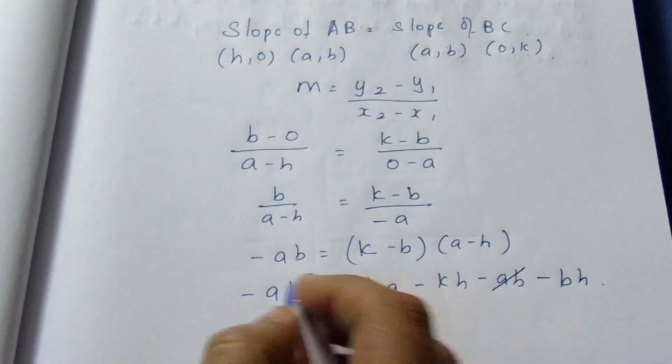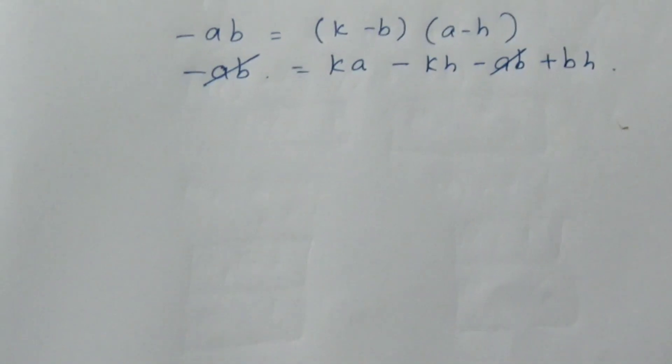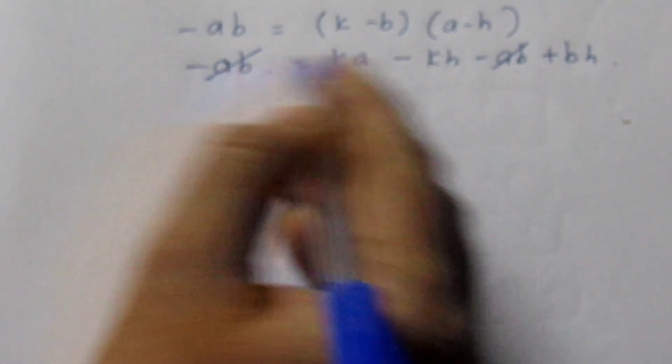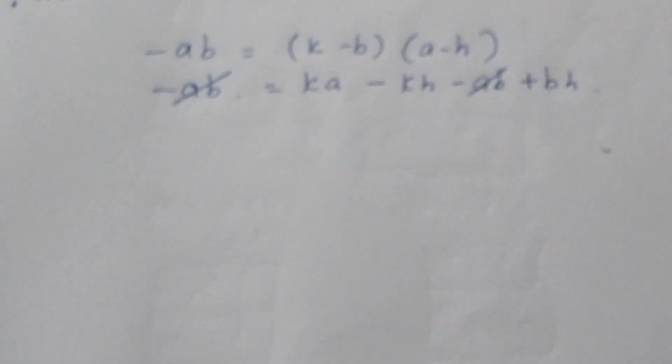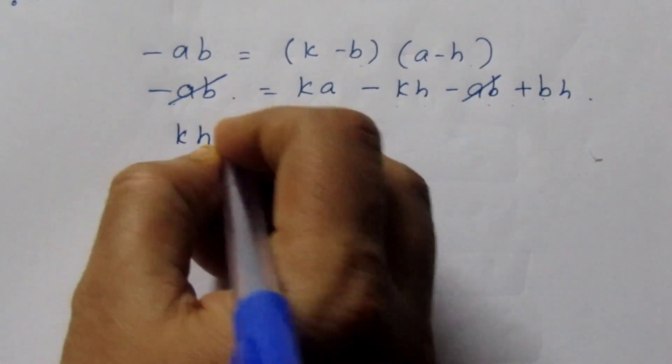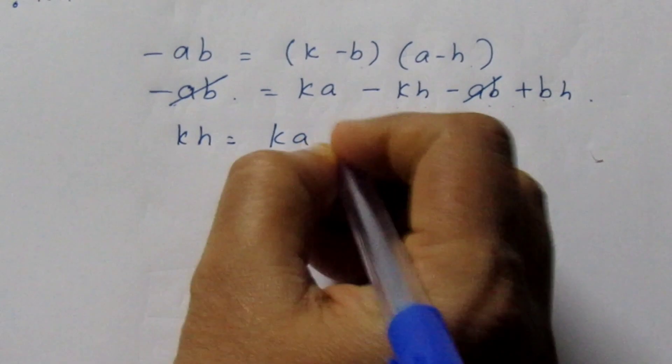Now -ab minus -ab get cancelled. After multiplying, we get ka minus kh minus ab plus bh. -ab minus -ab get cancelled because it is the same, the same sign. Now bring the negative to the other side. So kh is equal to ka plus bh.